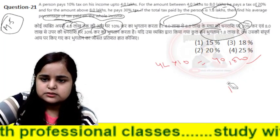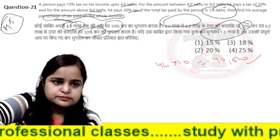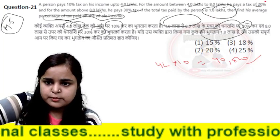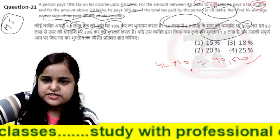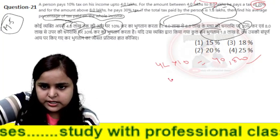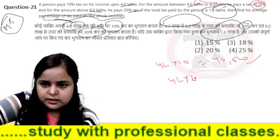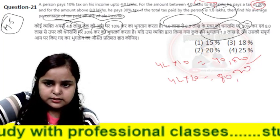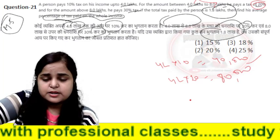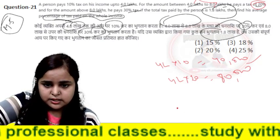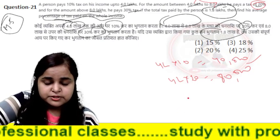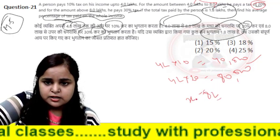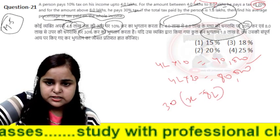For the next point, from 4 lakhs to 8 lakhs — that is 20% — the difference is 4 lakhs, so 20% of 4 lakhs gives us 80,000. Then above 8 lakhs, he pays 30%.